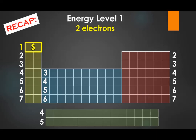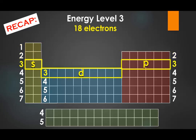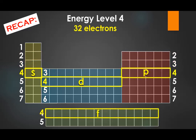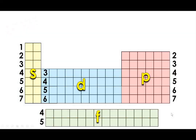So there are 2 electrons from level 1 assigned there, 8 electrons from level 2 assigned in those positions, 18 electrons from level 3 assigned in those boxes, and 32 electrons from level 4 assigned in those boxes — with 2 in S, 6 in P, 10 in D, and 14 in F. This organizational structure is an important one to be able to work with.